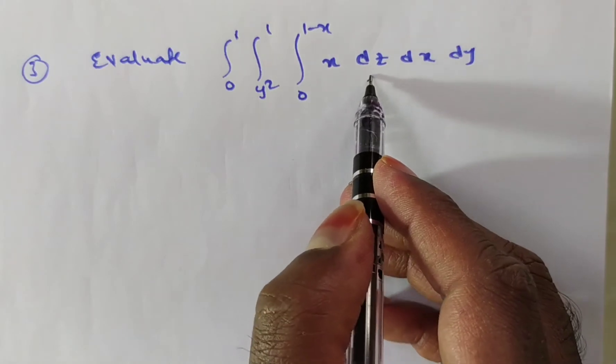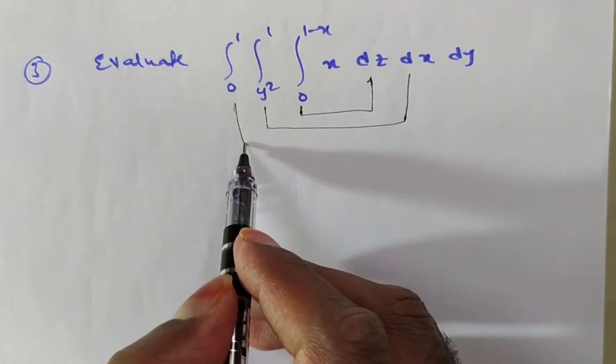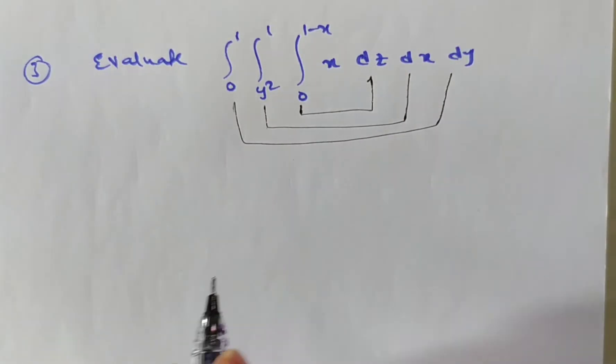here you have first dz. So first you integrate with respect to z and then with respect to x and finally you have to integrate with respect to y.